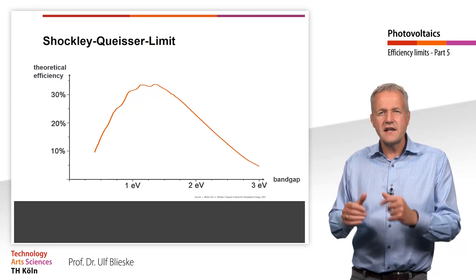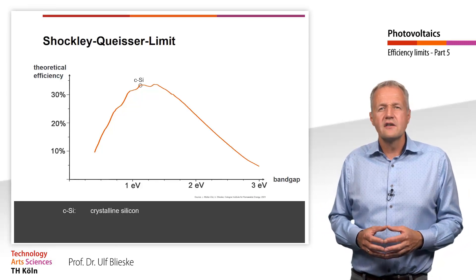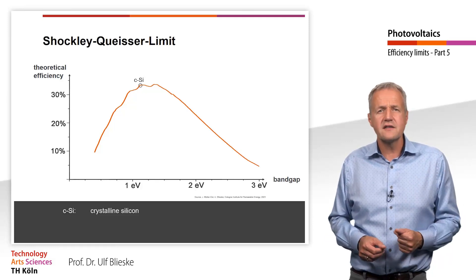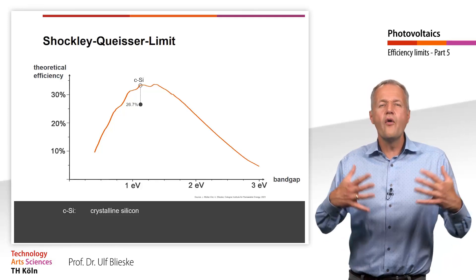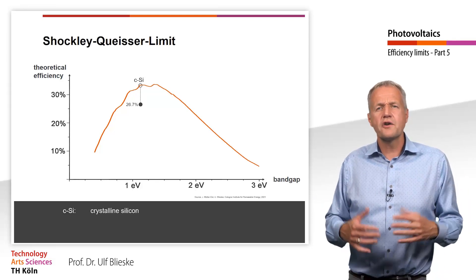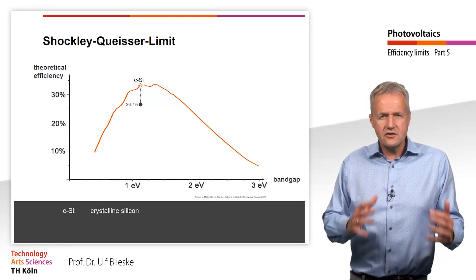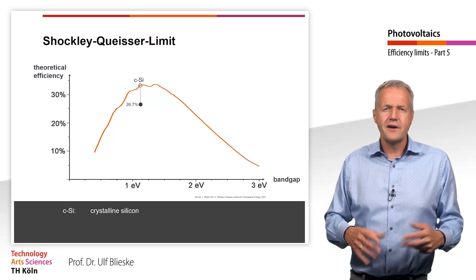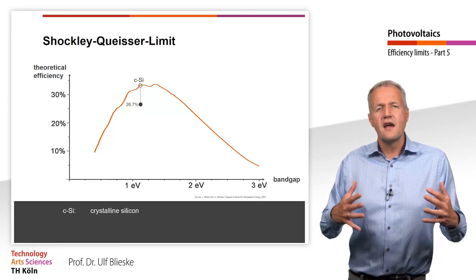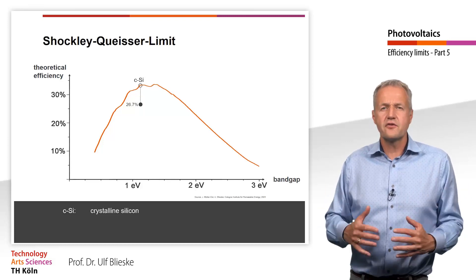Silicon is exactly in this range with a band gap of 1.1 eV. In reality, however, this theoretical efficiency is not achieved. For example, the efficiency record for silicon solar cells is currently 26.7%, although over 32% would theoretically be possible. This is because, in our consideration of theoretical efficiency, we have assumed that all photons are absorbed and contribute to the photocurrent. However, in a real solar cell, there are a number of losses, for example reflection losses, recombination losses and others. These losses can be minimized, but in practice it is not possible to reach this theoretical efficiency.